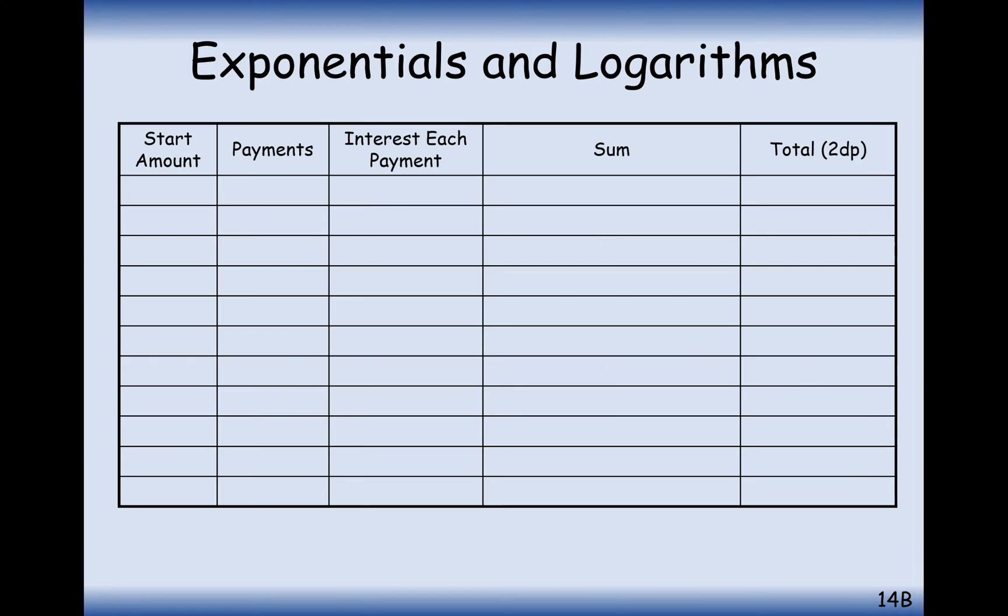So let's go through and see what we'd get if we were to divide it up into smaller and smaller sections. So one payment would give us £200. Two payments, one halfway through the year and one at the end of the year, will give us £225. Four payments for each quarter would give us £244.14. So we're increasing here, but we can see the rate at which we're increasing by is decreasing.